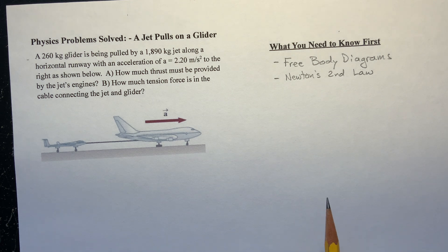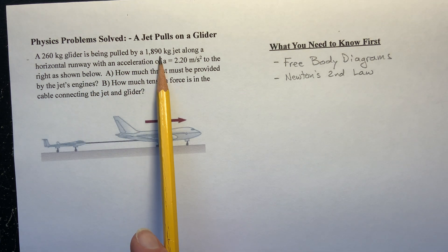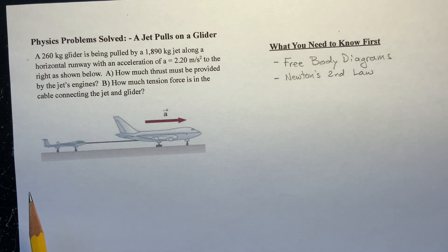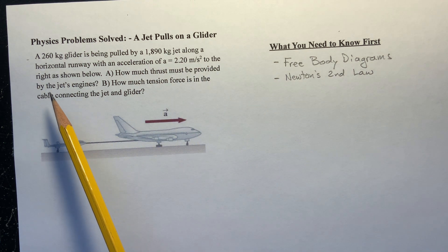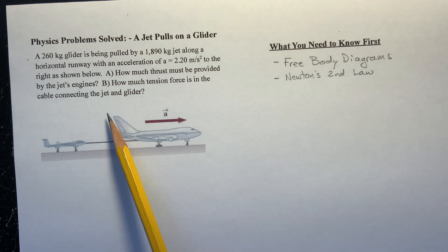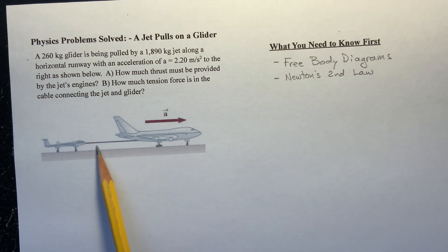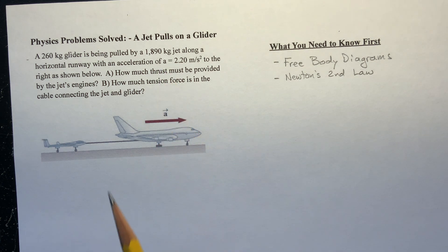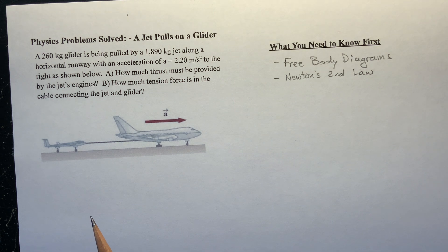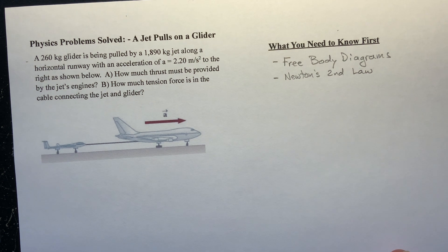So here we go. What is the problem today? We have a 260-kilogram glider is being pulled by a 1,890-kilogram jet along a horizontal runway with an acceleration of 2.2 meters per second squared to the right as shown below. How much thrust must be provided by the jet engine, and how much tension force is in the cable connecting the jet and the glider? Now this illustration is a little bit ridiculous. I bet a 747 has a lot more mass than 1,890 kilograms, and I doubt if you would use it to pull a glider, but this is the illustration that came with the problem.